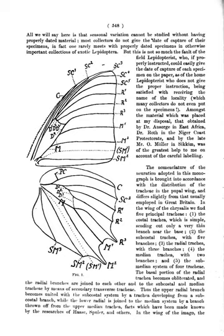Strigae: patterns with thin lines. Subcosta: taxonomically important term used in diptera identification keys, part of the schema of wing venation; the second longitudinal wing vein posterior to the costa; it may reach the costa, fade before the costa, or join R1 before it reaches the costa; equals auxiliary vein of many authors.